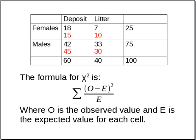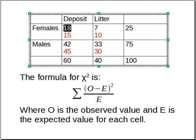Now we have to have a formula for computing the chi-squared statistic. For every cell, we'll take the observed number, subtract the expected number, square that, and divide by the expected number. So chi-squared is the sum over all cells of (observed minus expected) squared, divided by the expected value.